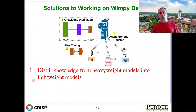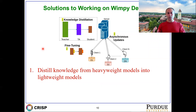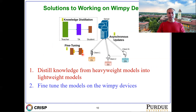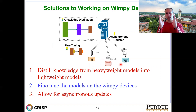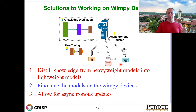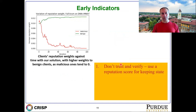The solutions for working on WMP devices are: first, distill knowledge from heavyweight models into lightweight models at the server; then fine-tune the models at the client devices — fine-tuning can be limited to just the final layer or final few layers; and allow for asynchronous updates from clients, given the variable execution speed and variable network connectivity.